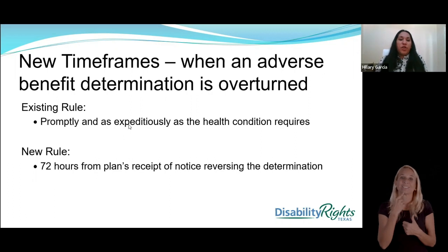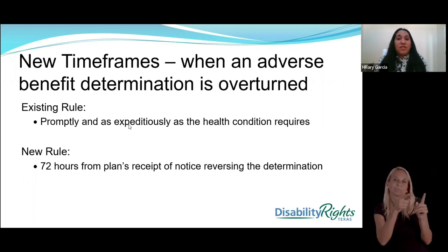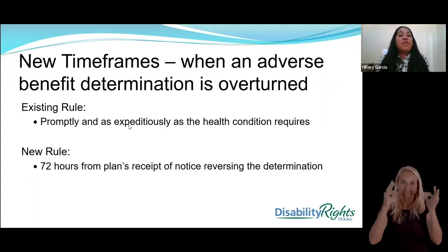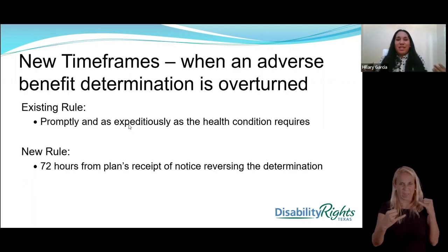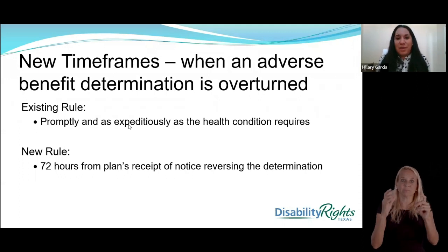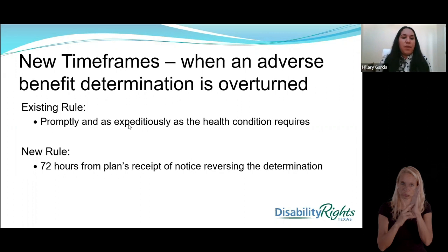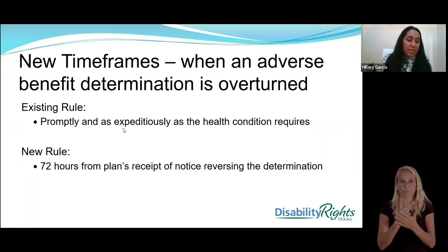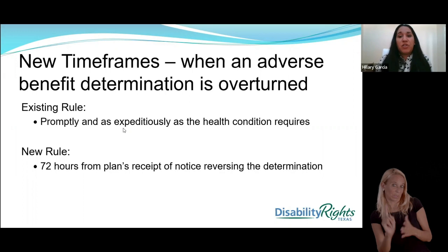If a decision is overturned — meaning after your initial appeal you receive a letter that the service has been approved — the health plan or agency is saying they reviewed the information and feel the decision should have been approved and never denied. Previously there was no specific timeframe; notices used vague language like 'promptly and expeditiously,' which was hard to define. Now there is a 72-hour rule: the service authorization has to be issued within 72 hours. That's better because now both parties are aware they have 72 hours to ensure that service is approved.